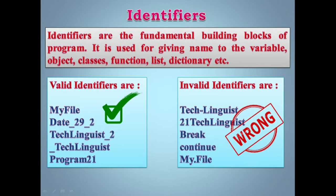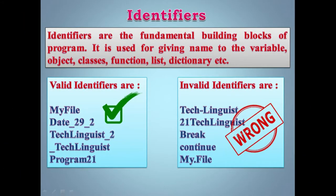Identifier is the fundamental building block of a program. It is used to give name to a variable, object, class, function, list, tuple, dictionary, etc. Identifier ka matlab hai — hum log kisi bhi cheez ko naam dete hain, aur us appropriate name ko hum log identifier bolte hain. Means identifier use karte hain kisi bhi variable ko name karne ke liye.